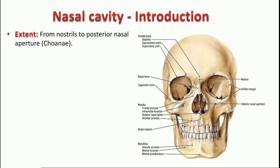The septum makes both halves asymmetrical. On the lateral wall of the nasal cavity you can see some projections. They are called the turbinate bones, also known as conchae. We will come to those in more detail later.